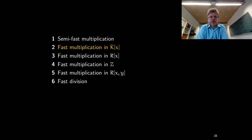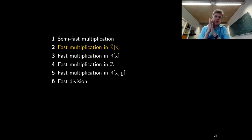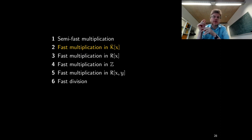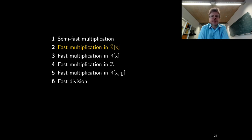What does the Fourier transform do? It's a matrix-vector multiplication that turns a vector of coefficients of a polynomial into a vector of values of this polynomial, with the evaluation points that are powers of a primitive root of unity. A root of unity was a field element whose nth power is 1, and it's called a primitive nth root of unity if no smaller power of the element is 1.